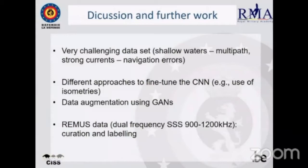For future work: this is a very challenging dataset — shallow water causes multipath effects affecting image quality and classification results. Strong currents cause navigation errors at far ranges. This must be considered when developing new approaches for automatic target recognition for data collected in the North Sea. For the future, we want to consider different approaches to fine-tuning, including the use of isometries as recommended by the authors of this convolutional network, and data augmentation using GANs.